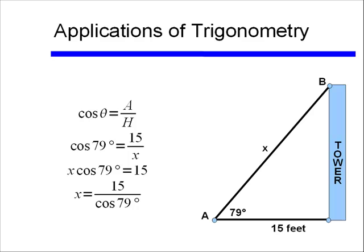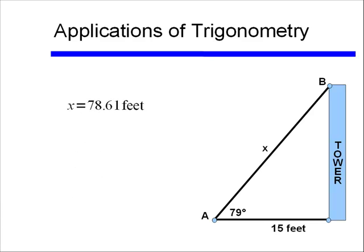If I cross multiply, I get x times cosine of 79 degrees is equal to 15, or x is equal to 15 divided by cosine of 79 degrees. And I'm assuming at this point that you're comfortable enough with your calculator that you don't need to have me demonstrate it anymore. And if we type that into our calculator, assuming we're in the correct mode, we need to be in degree mode, we'll get an answer of 78.61 feet.